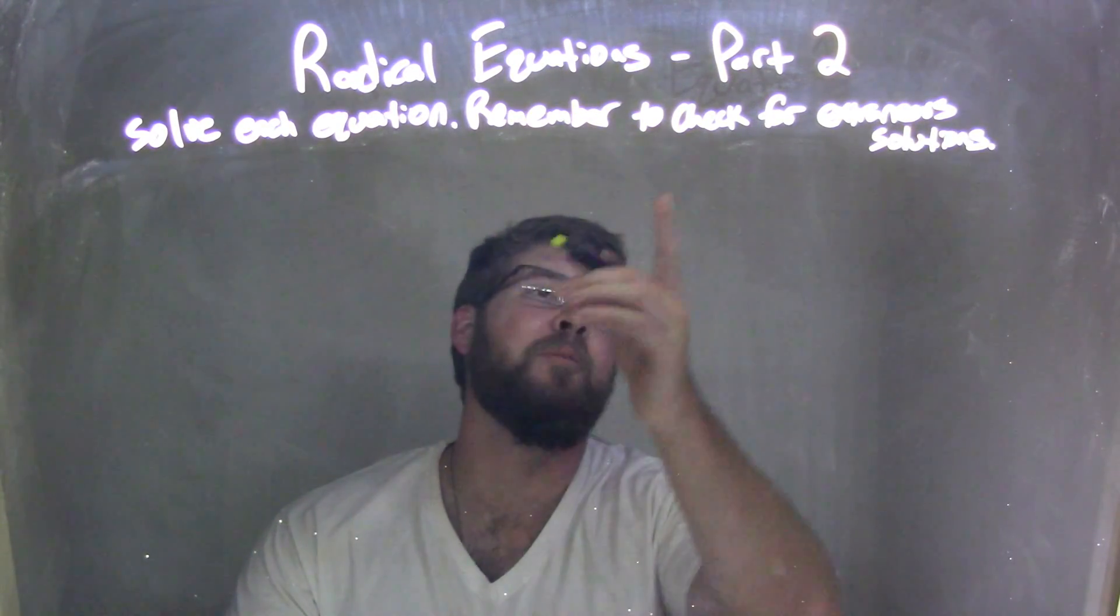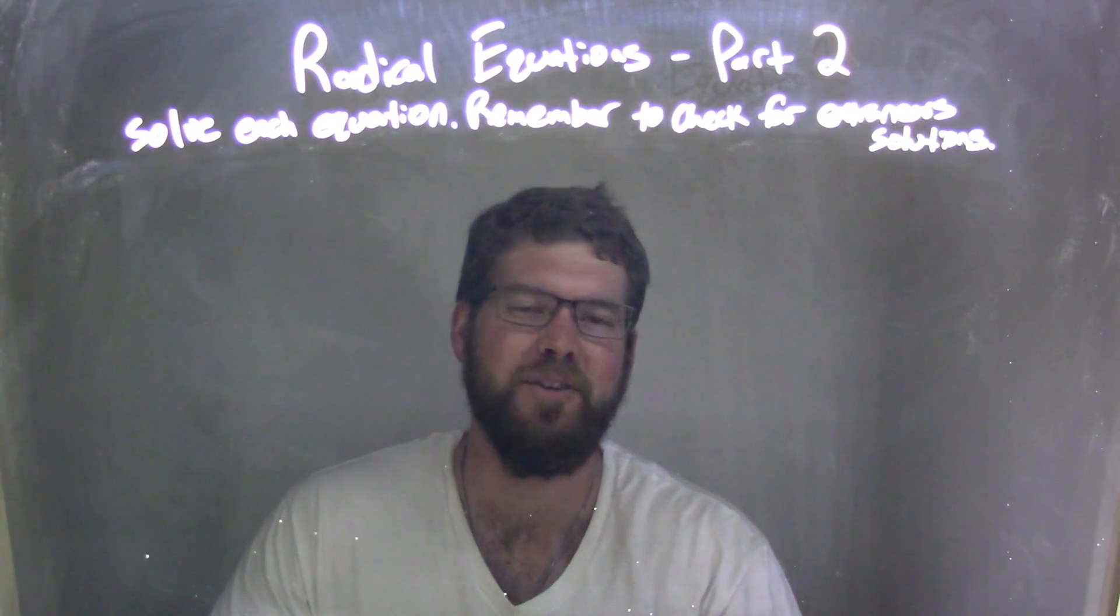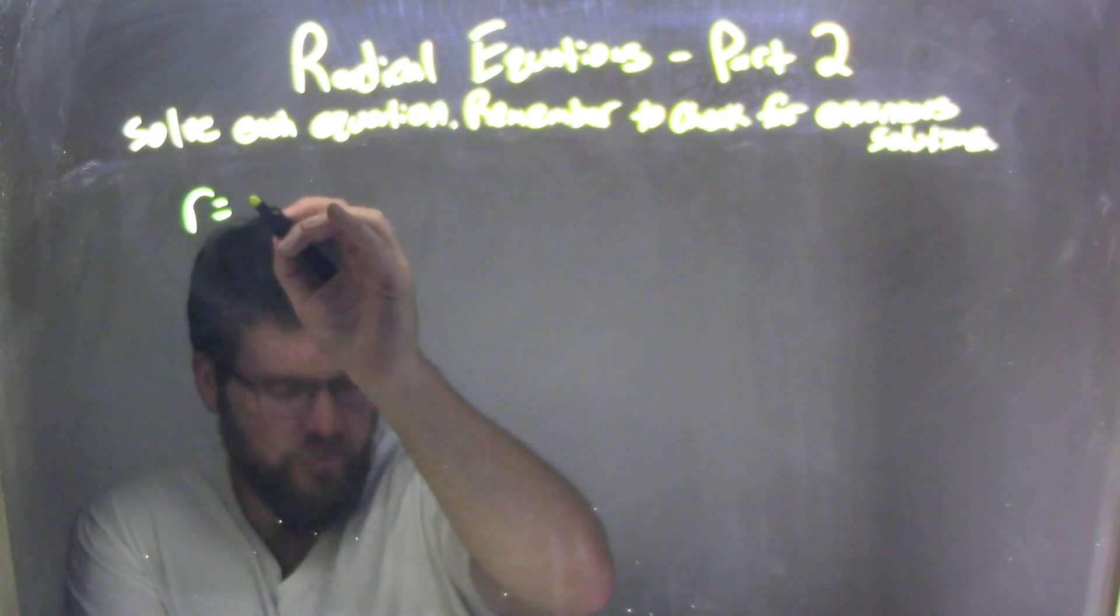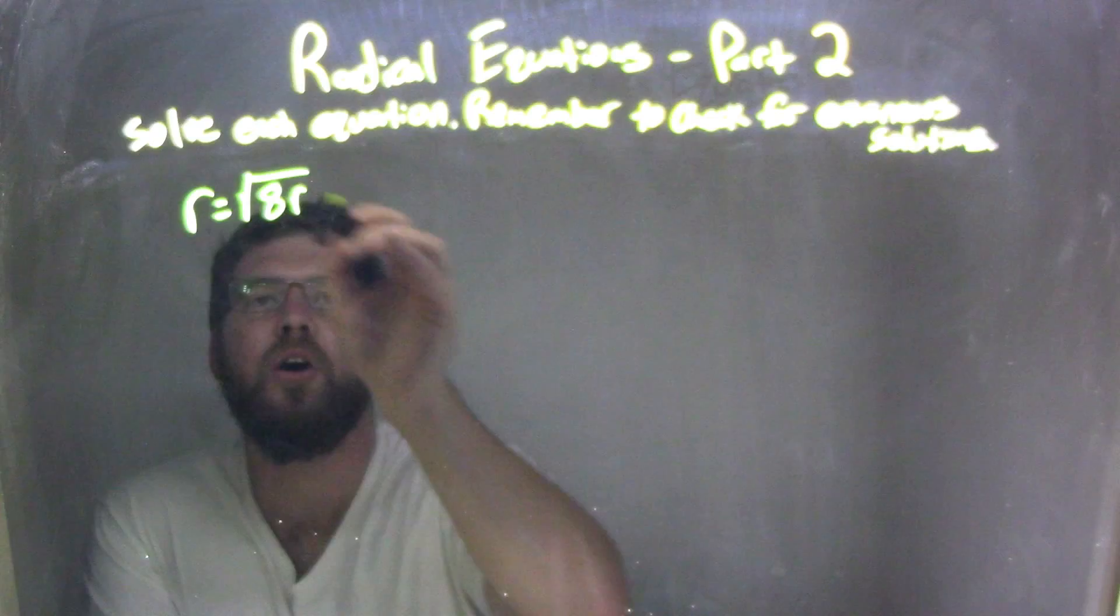Solve each equation, and remember to check for extraneous solutions. So if I was given this equation, r equals the square root of 8r.